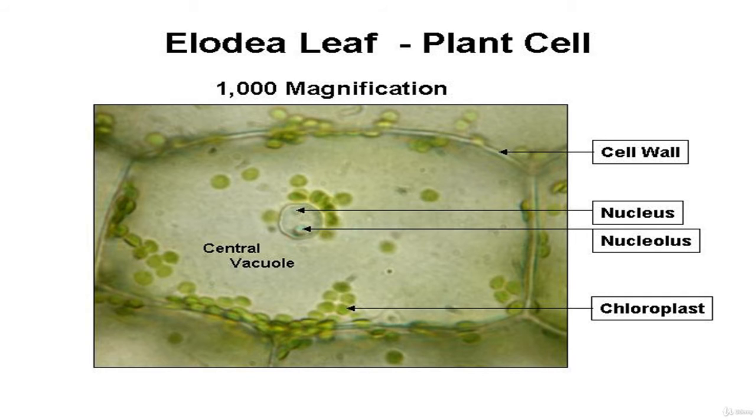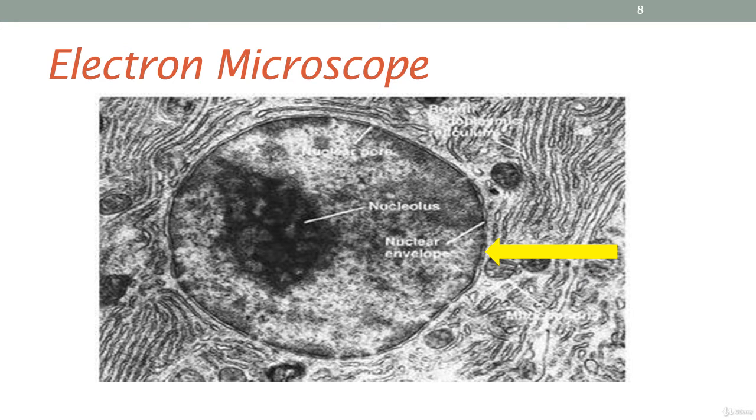An electron microscope is quite powerful in its magnification. They can magnify structures up to 10 million times. In this image, the nucleus is magnified. If you look closely at the center, you should be able to see the nucleolus. The main function of this nucleolus is to assemble ribosomes. In time, the ribosome function would be to manufacture proteins.